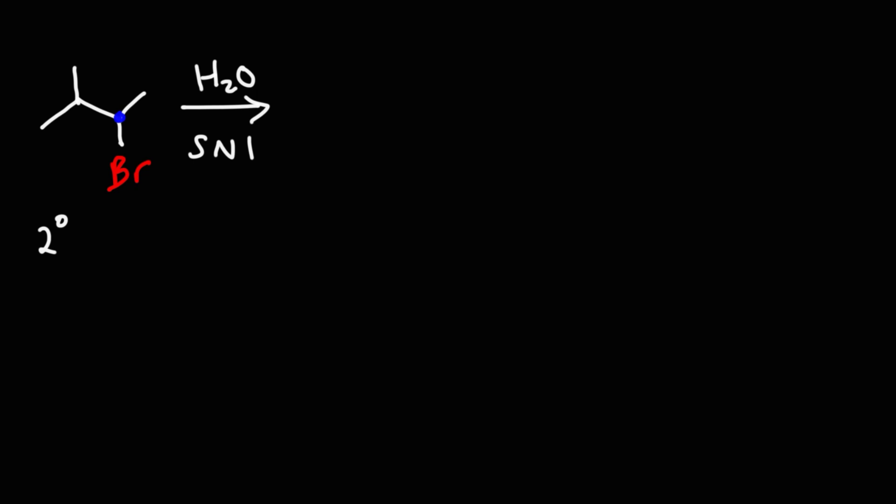For an SN1 reaction, the first step that's going to happen is the leaving group is going to leave. When carbon loses a bond, it's going to acquire a positive charge. So what we have here is a secondary carbocation. Now how do you know whether or not a carbocation will undergo rearrangement? The key is stability.